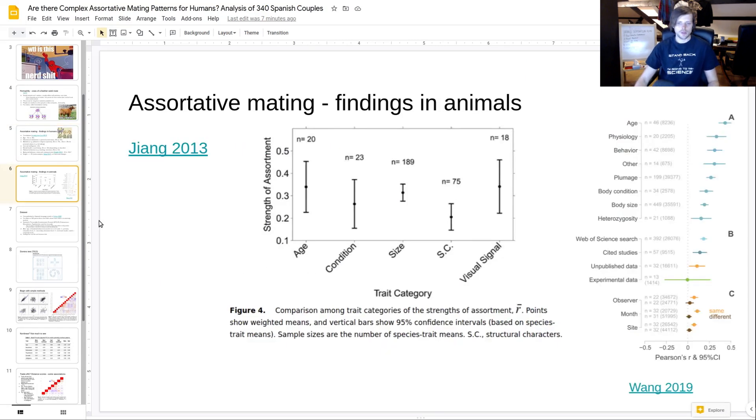If we look at animals, there's tons of studies of different animals. We have this Jiang meta-analysis. They looked at different things - you can see age is high and condition, I don't even know what that is, size and some other stuff. Someone did a specific meta-analysis in birds. It's this one, Wang et al. And they also, like humans, find that age is the strongest one, but much less strongly correlated. Here we get, I don't know, 0.4 or so. Some physiology is quite strong. Some other stuff like heterozygosity is much weaker - that's a genetic measure. Body size, some things that are less important.